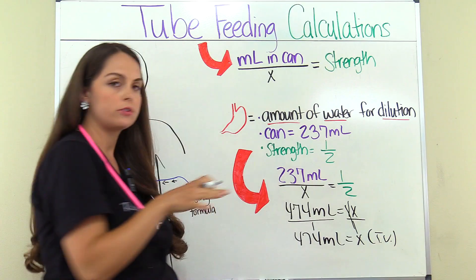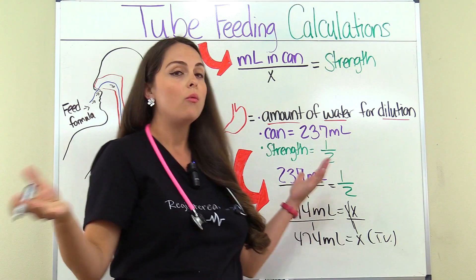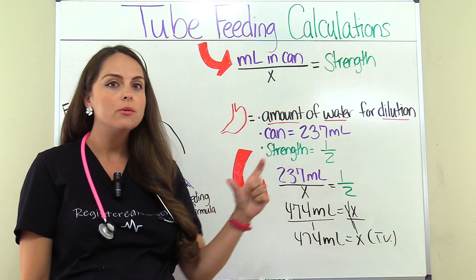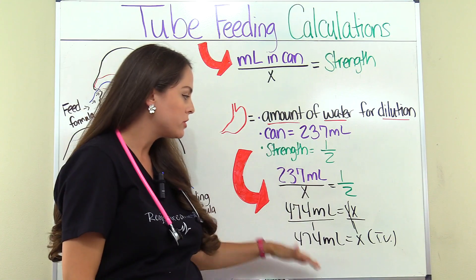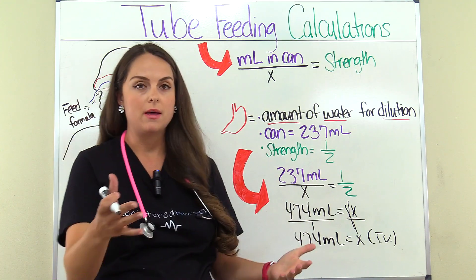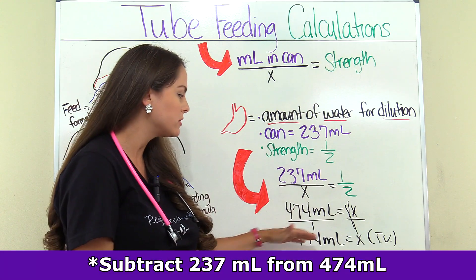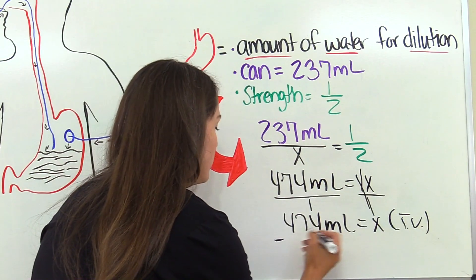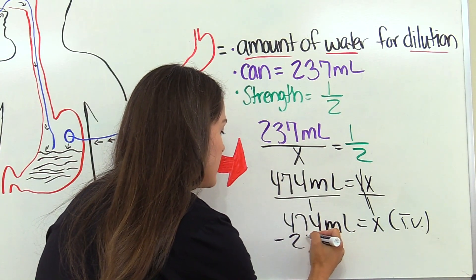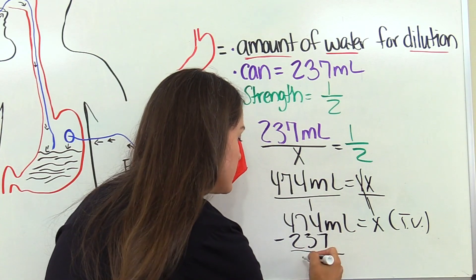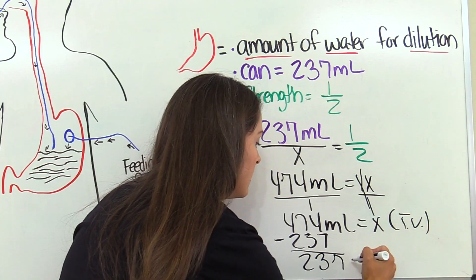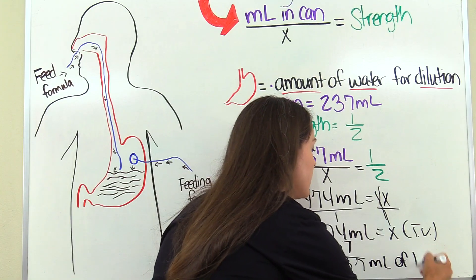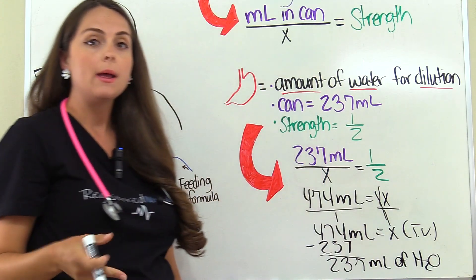But our problem isn't asking for total volume — we need to know the amount of water. Since we already know our can contains 237 milliliters and our total volume is 474 milliliters, we're going to subtract: 474 minus 237 equals 237 milliliters of water that's going to be added to that feeding formula to dilute it based on what the physician ordered.